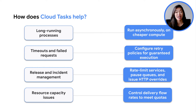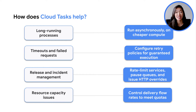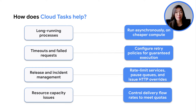Diving into some of the benefits of Cloud Tasks: for long-running processes, it can often tie up some of your high performance computing power affecting your application's performance. With Cloud Tasks, tasks are executed asynchronously, helping to reduce latency, and by utilizing resources more effectively, this can also help to reduce costs in the long run. Cloud Tasks can also help with timeouts and failed requests by configuring retry parameters, which are important for handling transient failures. It also has reliable delivery by handling task duplication and at-least-once delivery. For release and incident management, you can control the execution with rate limiting by setting the rate at which tasks are dispatched, the maximum number of attempts, and the minimum amount of time to wait between attempts. If you have any resource capacity issues, Cloud Tasks can also control the delivery flow rates for you to meet your orders.